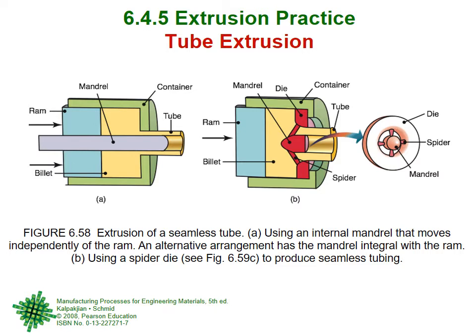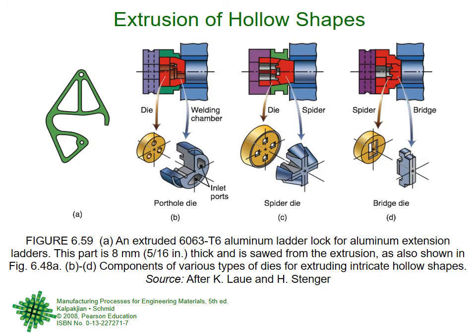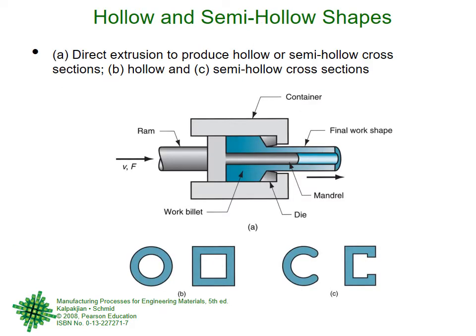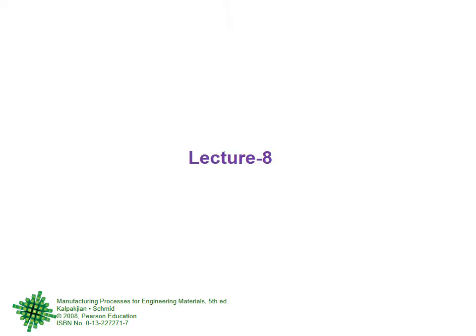We showed three major types of die structures used to create hollow shapes like tubes and pipes: porthole die, spider die, and bridge die. We talked about hollow and semi-hollow shapes — there is solid, there is hollow, and in between there is semi-hollow. That is where we stopped last time; it was a brief lecture because I did not want to jump directly from extrusion into the next manufacturing process.